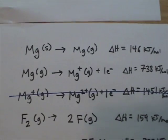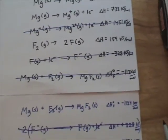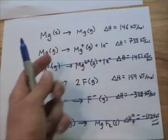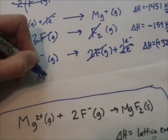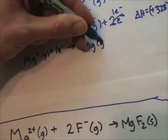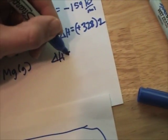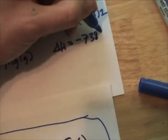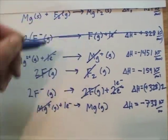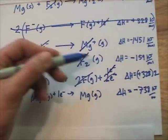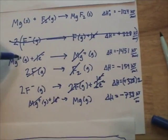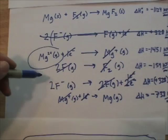We go back to our original given and we've got these two equations. Our magnesium cations are a product here. Well, they're also a product there. So we're going to want to flip this equation. Mg plus plus one electron gives Mg gas. Delta H is equal to negative 738 kilojoules per mole. And now we'll see that this magnesium cancels. That extra electron cancels.